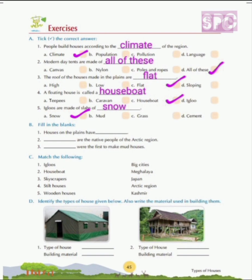Question 4: A floating house is called a dash — tepees, caravan, houseboat, or igloo. The answer is C, houseboat. A floating house is called a houseboat. Question 5: Igloos are made of slabs of dash — snow, mud, grass, or cement. As we all know, igloos are made of slabs of snow, so the answer is A, snow.